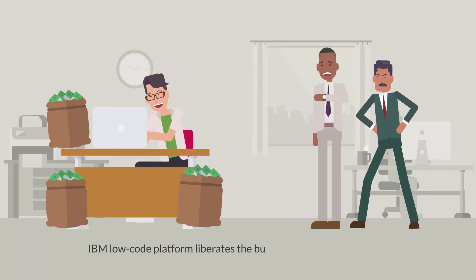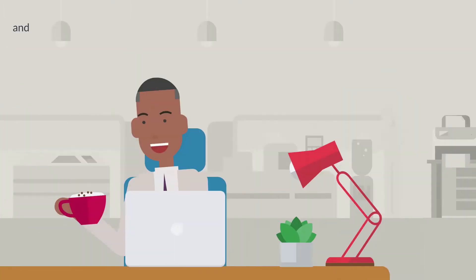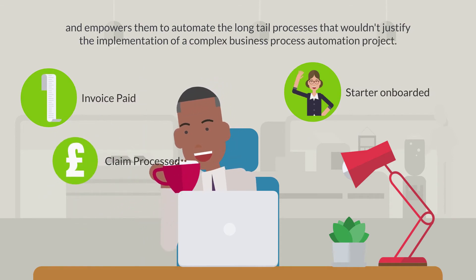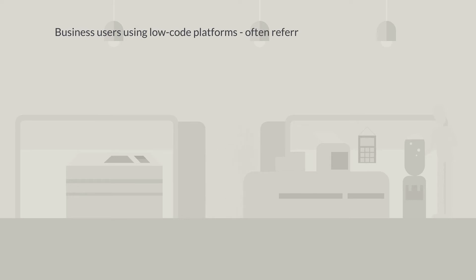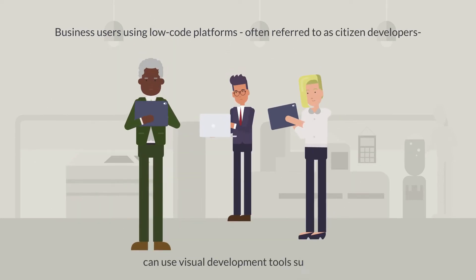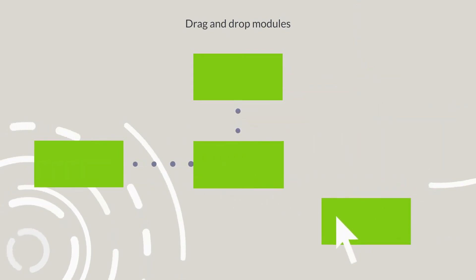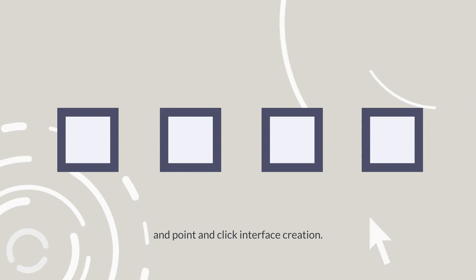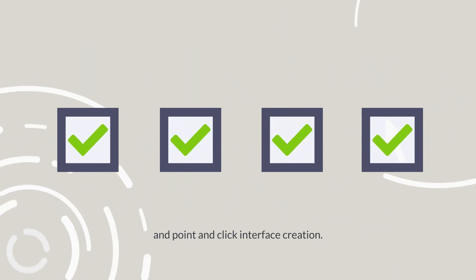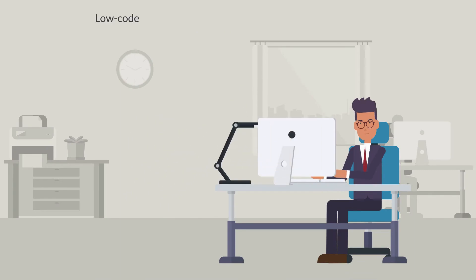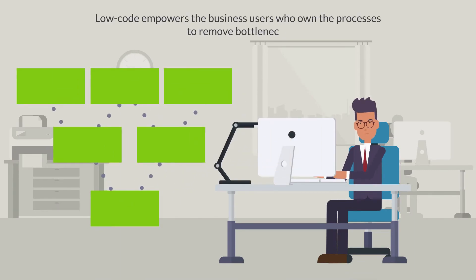IBM low-code platform liberates business users from complete dependency on highly skilled IT resources and empowers them to automate the long tail of processes that wouldn't justify implementation of a complex business process automation project. Business users using the low-code platform, often referred to as citizen developers, can use visual development tools such as drag-and-drop modelers and point-and-click interface creation to enable the rapid creation, deployment, and maintenance of powerful business apps. Low-code empowers the business users who own the processes to remove bottlenecks.